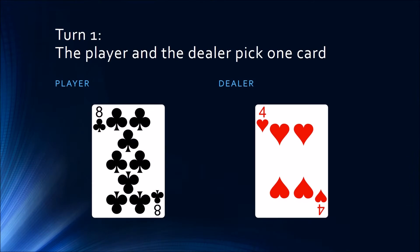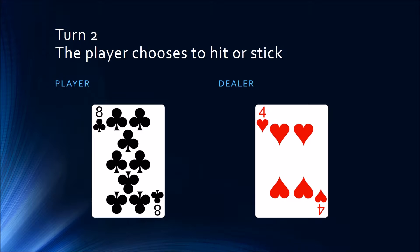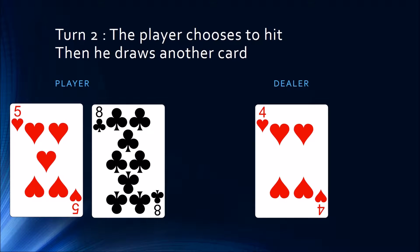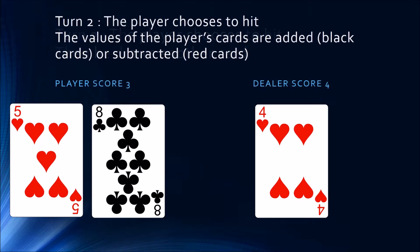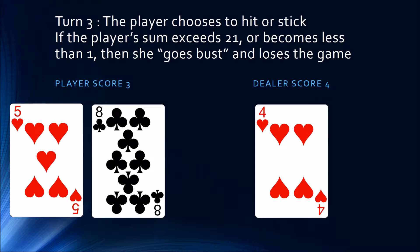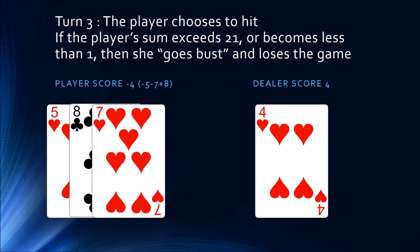I will explain the game. In the first turn, the player and the dealer each pick one card. In the second turn, the player chooses to hit or to stick. If the player chooses to hit, he draws another card, and his score is computed by adding black cards and subtracting red cards. So in this case his score is 8 minus 5, which is 3. If the player's sum exceeds 21 or becomes less than 1, he goes bust and loses the game. In this case the player's score is minus 4, so he lost.